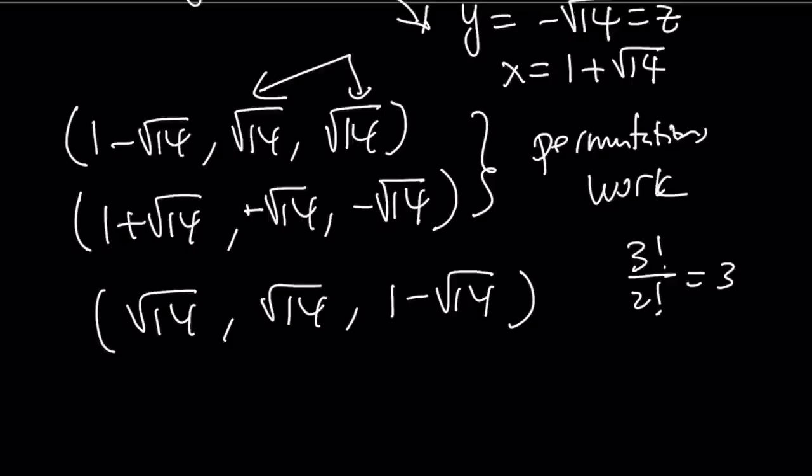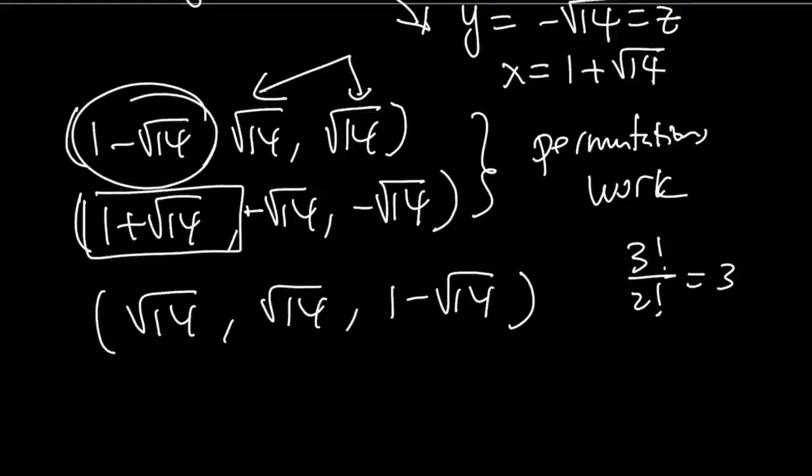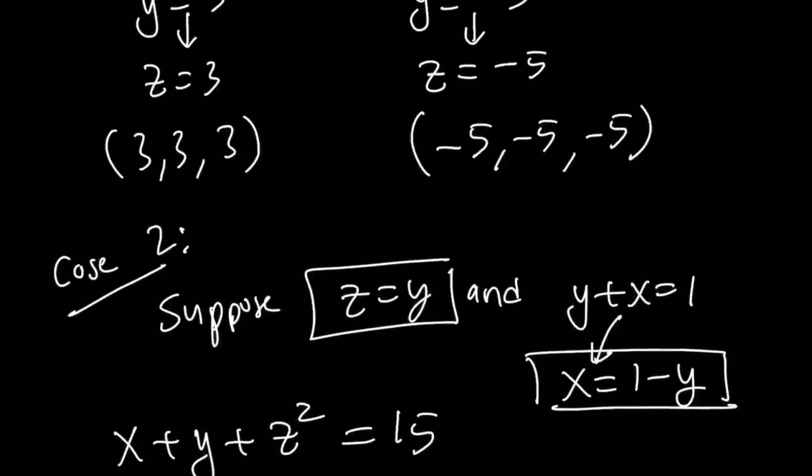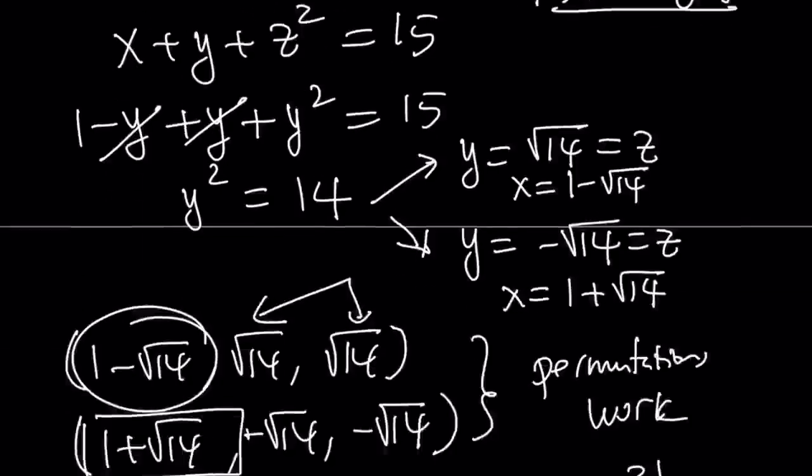So, this can be in three different places, x, y, z, the others are going to be square root of 14, or this can be in one of the three places, and the other two variables are going to be negative square root of 14. And the other cases are 3, 3, 3, and negative 5, negative 5, negative 5, where they are all equal to each other.